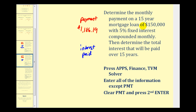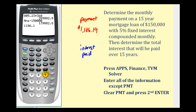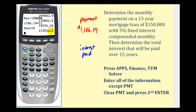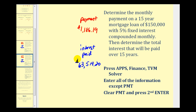To determine the total interest paid over 15 years, we'll take the monthly payment, multiply it by 12 for the number of payments per year, and then multiply by 15 for 15 years. This is the total amount paid over the 15 years; minus the loan amount leaves us with the total interest paid — $63,514.20. So for the 15-year mortgage, the monthly payment went up considerably, but the amount of interest paid also went down considerably. If you can afford the 15-year mortgage, you save yourself from paying a lot of extra interest.